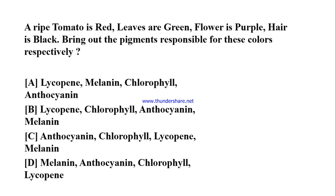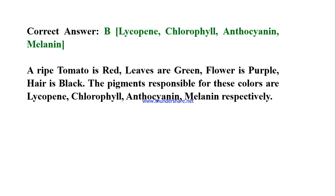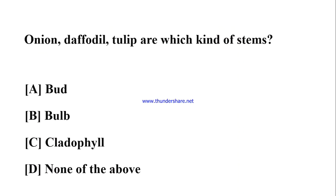A ripe tomato is red, leaves are green, a flower is purple, and hair is black. What are the pigments responsible for these colors respectively? A) Lycopene, melanin, chlorophyll, anthocyanin; B) Lycopene, chlorophyll, anthocyanin, melanin; C) Anthocyanin, chlorophyll, lycopene, melanin; D) Melanin, anthocyanin, chlorophyll, lycopene. Correct answer: B) Lycopene, chlorophyll, anthocyanin, melanin.